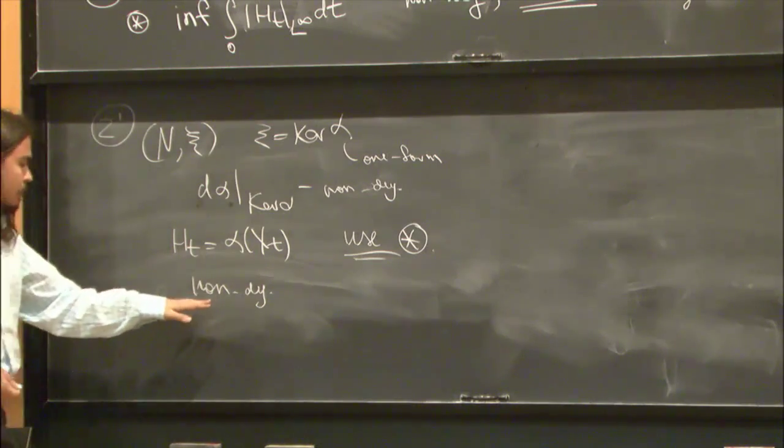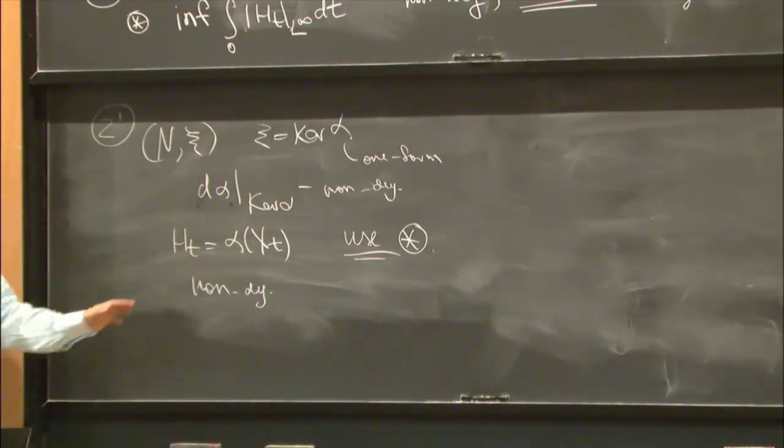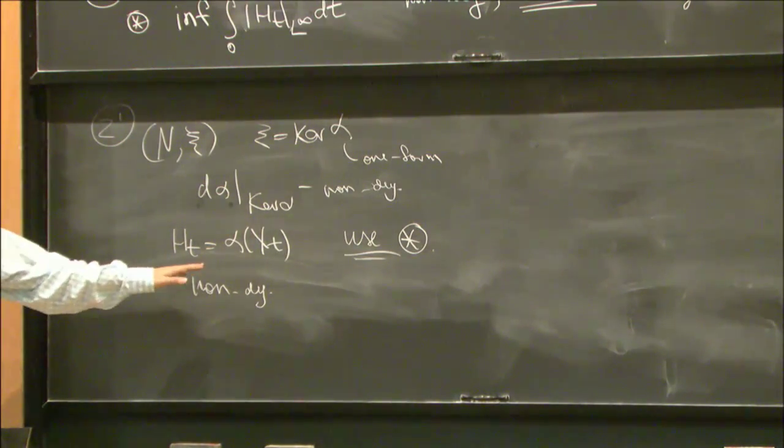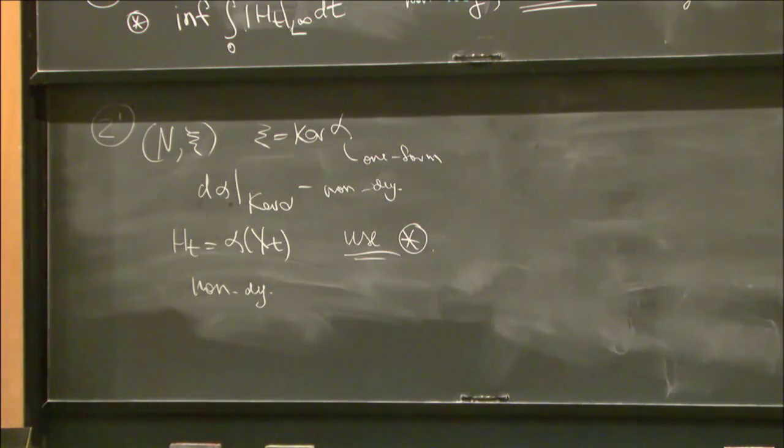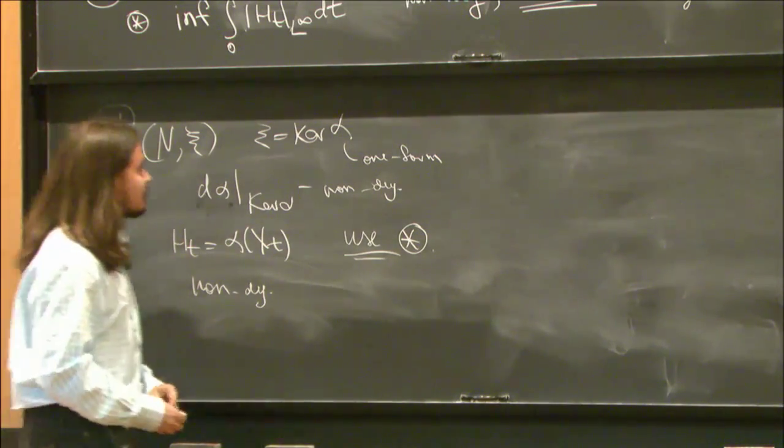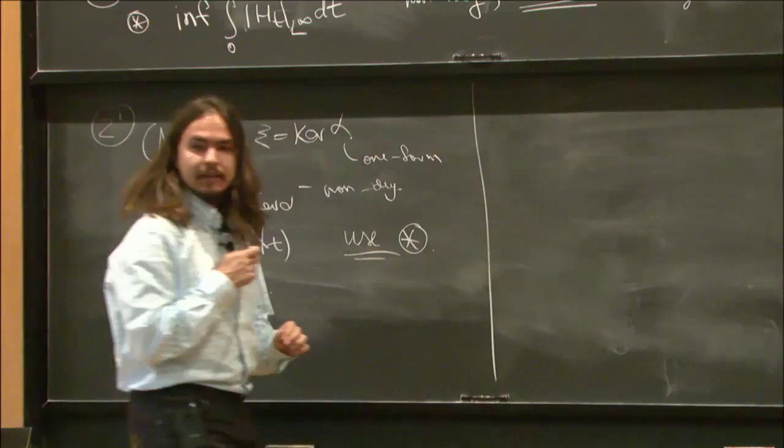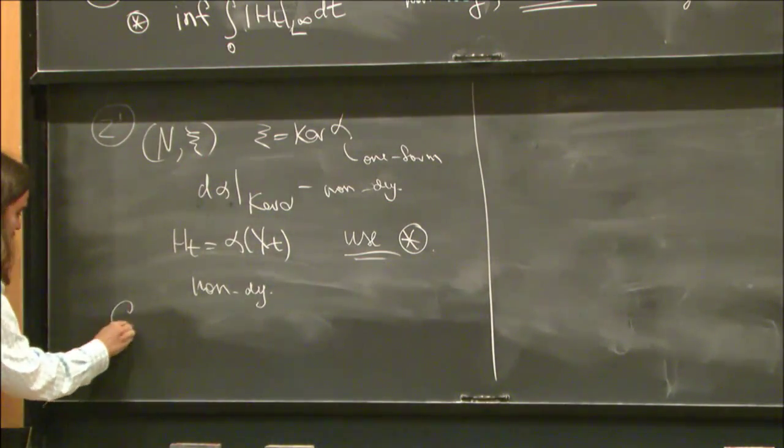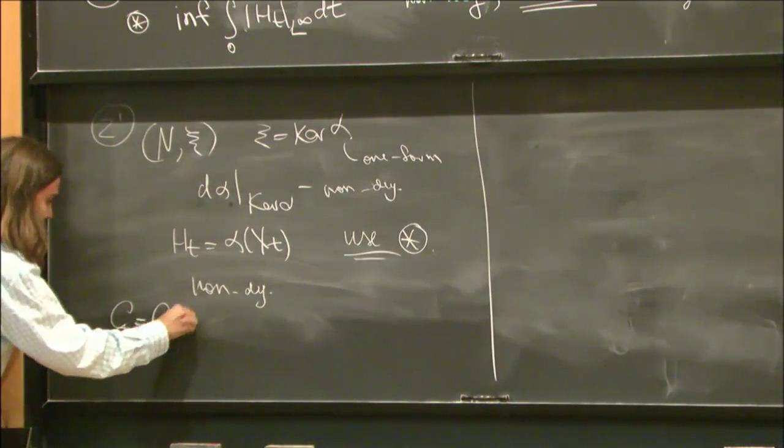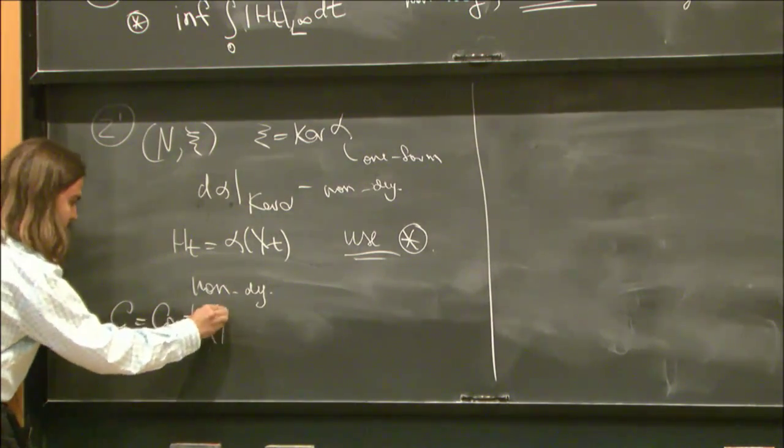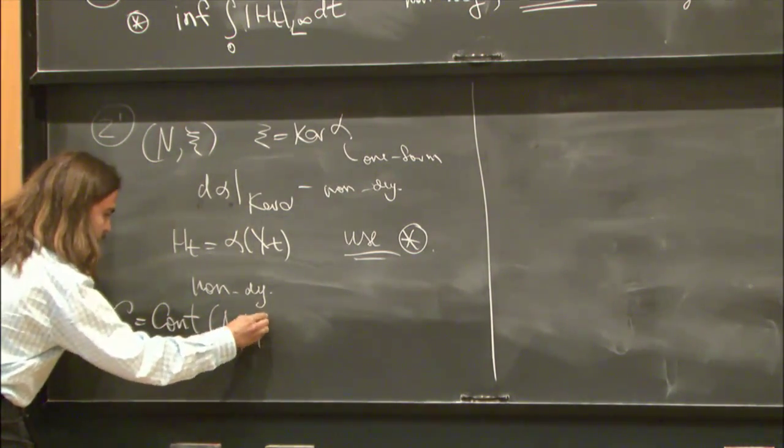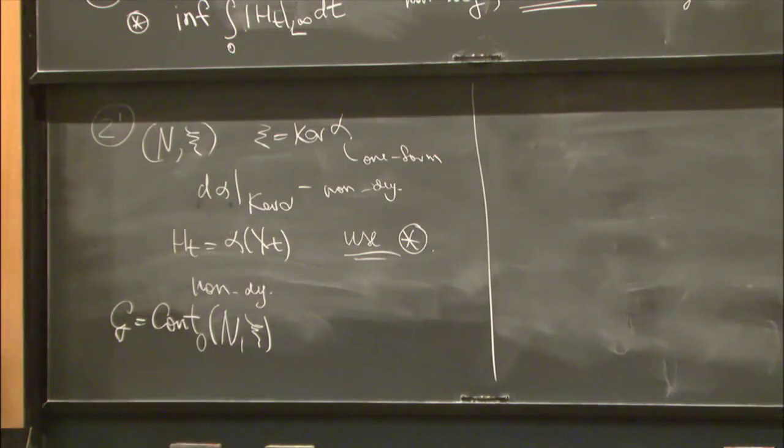I've been able to show this using work of Eliashberg and Spaeth-Muller. In this case, the group is the group of contactomorphisms of this contact manifold. Well, the identity component, because I need the isotopy.